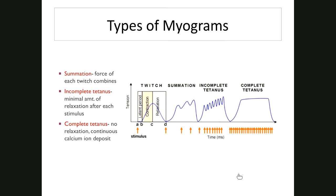Treppe is stimulation of the muscle fiber just after the relaxation period has ended, which results in a slightly higher contraction strength. That's basically wave summation.